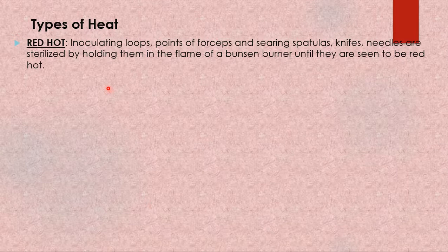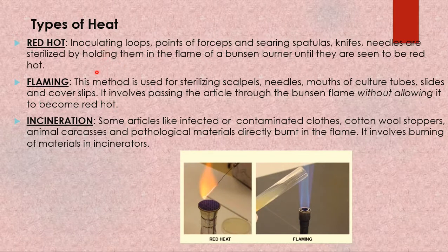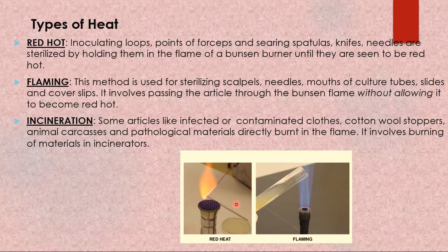The first type of dry heat is red heat. It is used to sterilize needles, inoculation loops, points of forceps, and spatulas by holding them in the flame of a Bunsen burner until they are seen to be red hot. An inoculation loop is a spoon-like tool used in microbiology labs to transfer or inoculate cultures, and it must be sterilized by red heat.